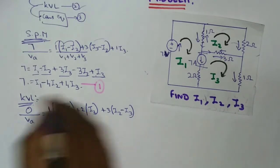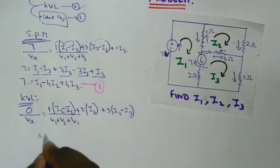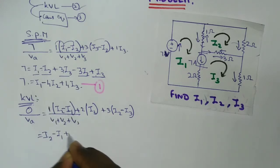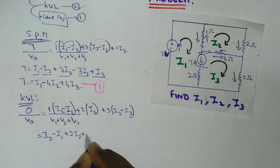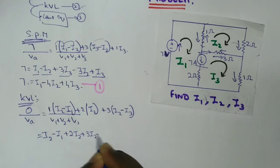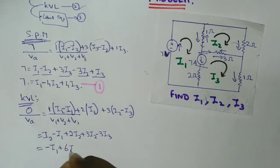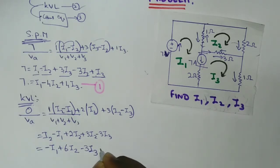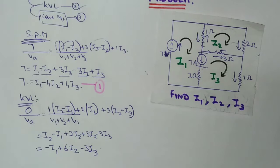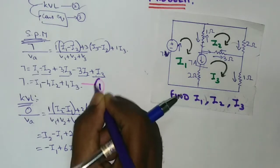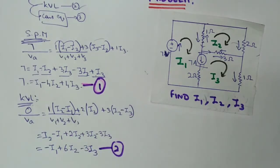This function is called I1, I2, I3. 3I3 — this is the second equation. This is the first and second equation.